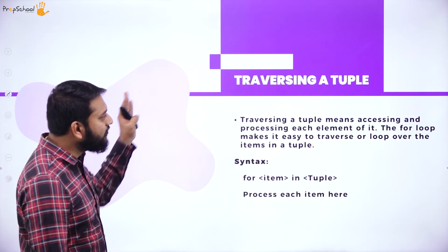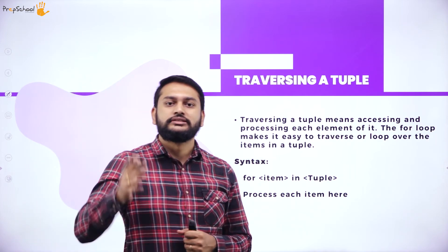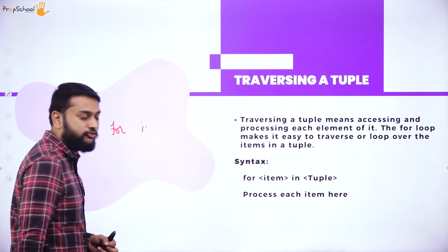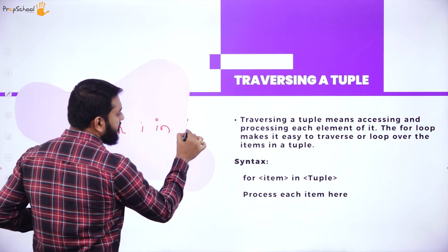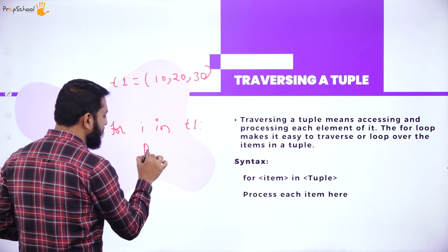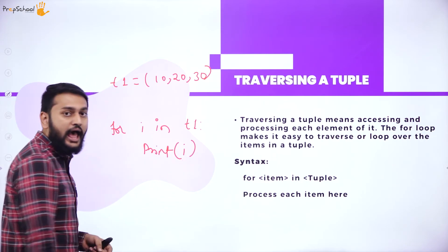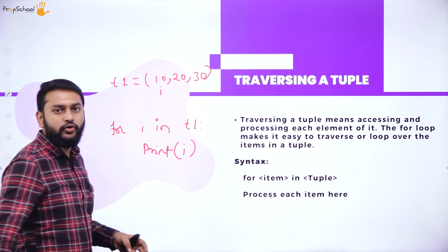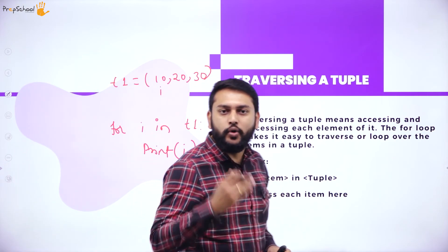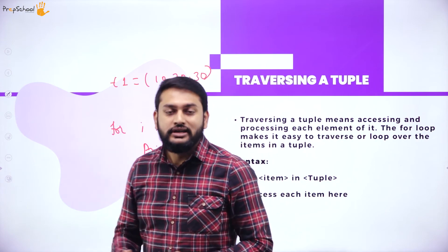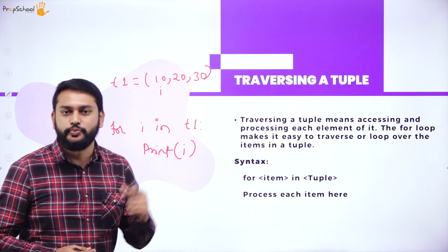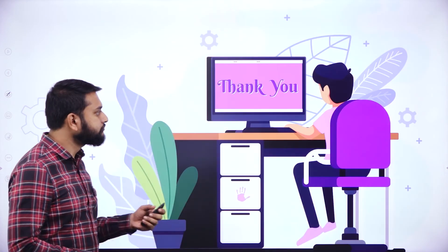Traversing a tuple uses the same concept as with lists — a for loop. For example: for i in t1, where t1 has values 10, 20, 30. Inside the loop I have a print statement that prints i. So i starts at 10, and the loop accesses all elements one by one until it reaches the last element in the tuple. That is the concept of traversing a tuple.